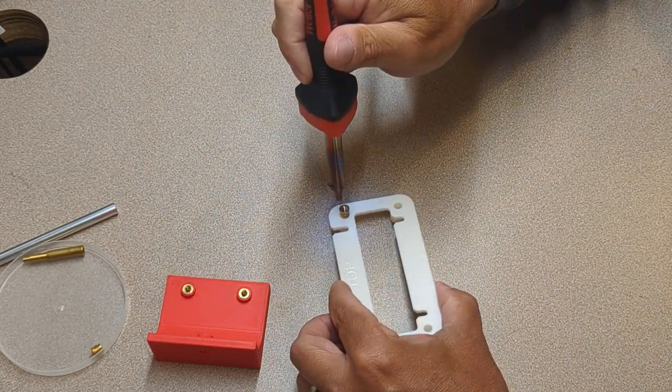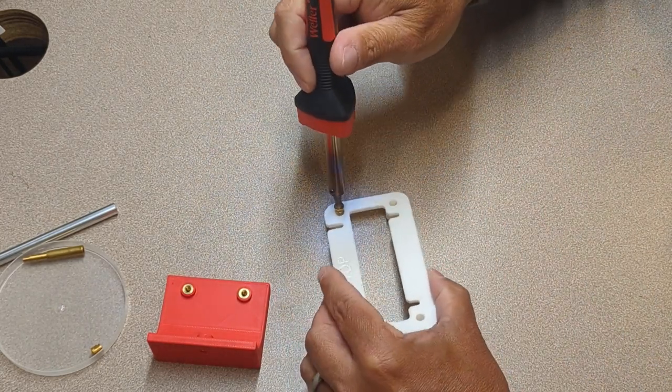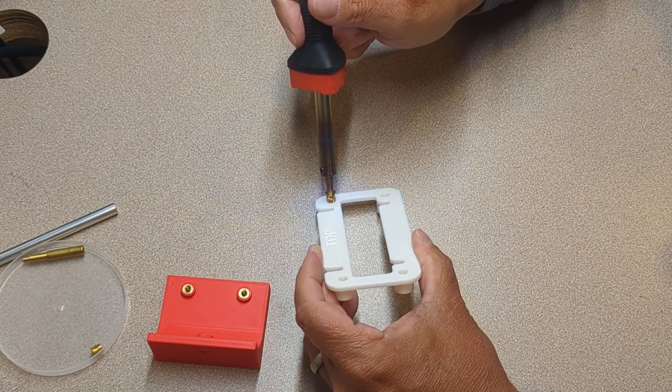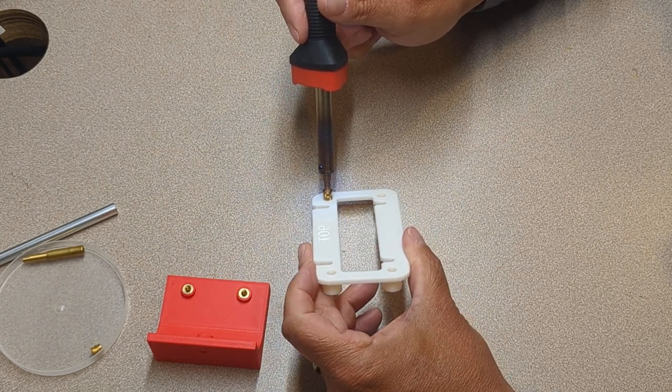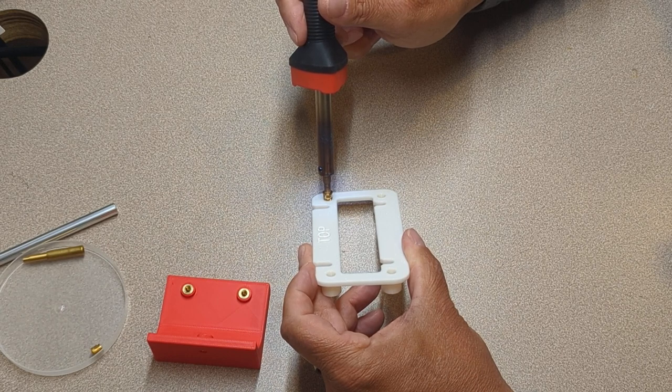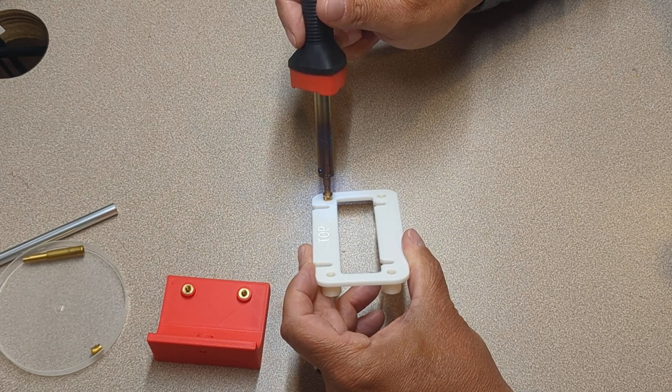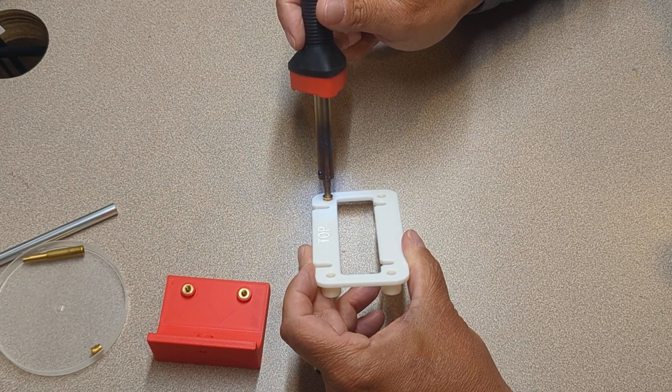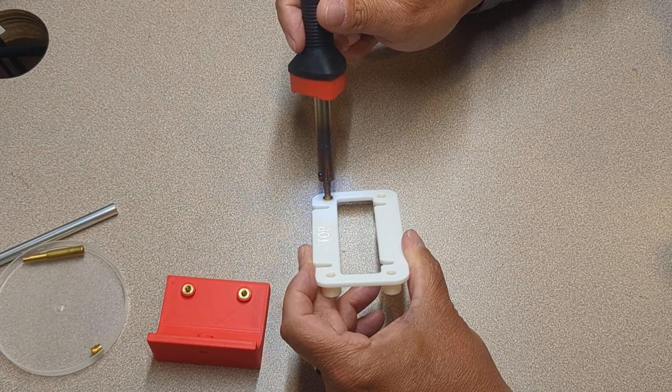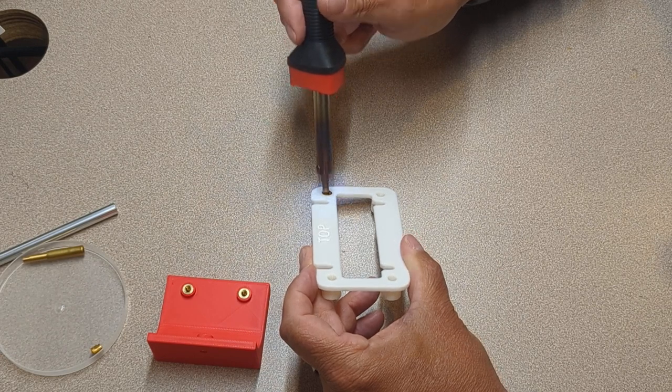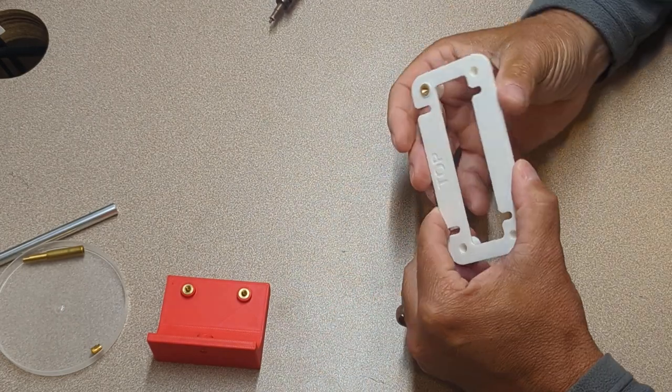Put it in place, pop the heat set insert tool on that and as the soldering iron heats up the plastic and the part can get pushed in there.